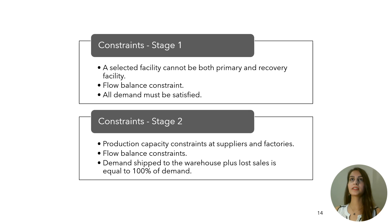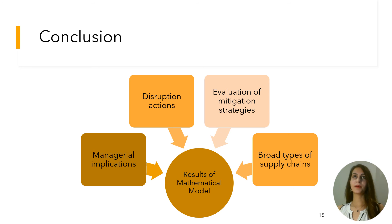The model constraints are as follows. In the first stage, a constraint ensures a selected facility is designated as either primary or recovery, but not both. A flow balance equation requires that the fraction of demand entering a facility equals the output, and all demand must be satisfied. In the second stage, constraints govern production capacity for suppliers and factories. Flow balance constraints ensure inputs equal outputs for each facility. Since this part relates to post-disruption operations, demand shipped to the warehouse plus lost sales must equal 100% of demand. The model's application is broad and can be applied to agricultural, healthcare, fashion, and other supply chains.